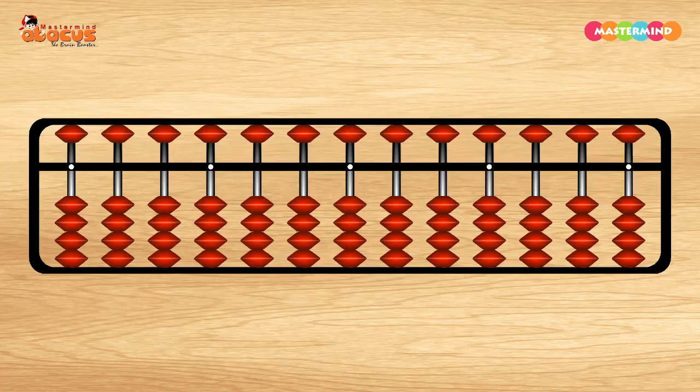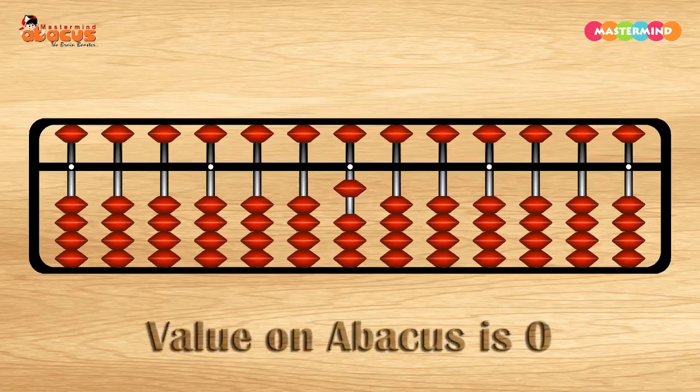For example, if we move one lower bead which touches the horizontal bar, then the value is 1. But if the bead does not touch the horizontal bar, the value on Abacus is 0.